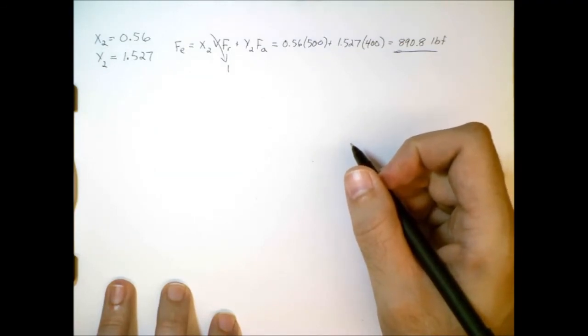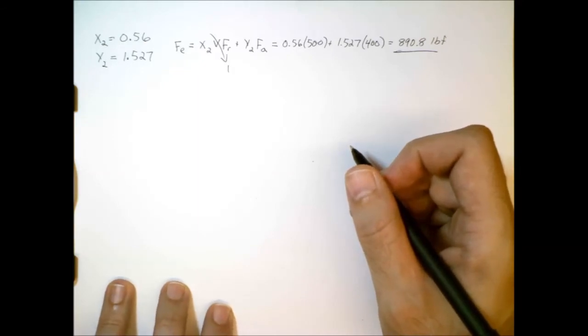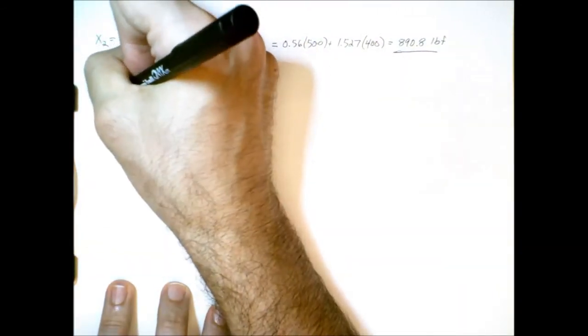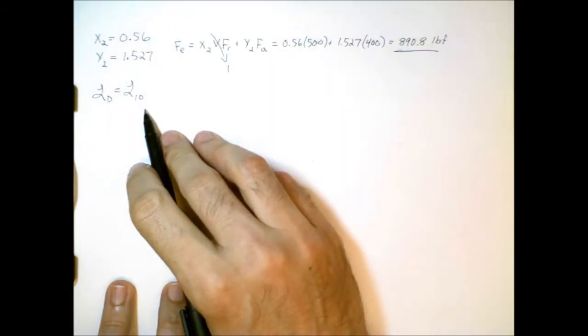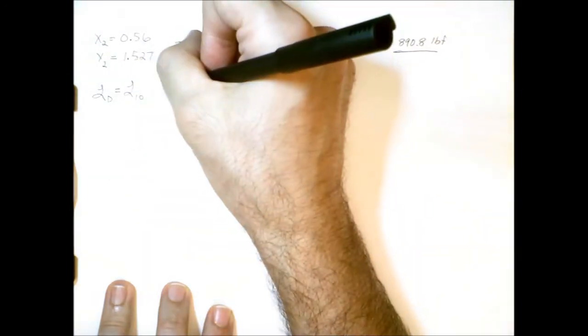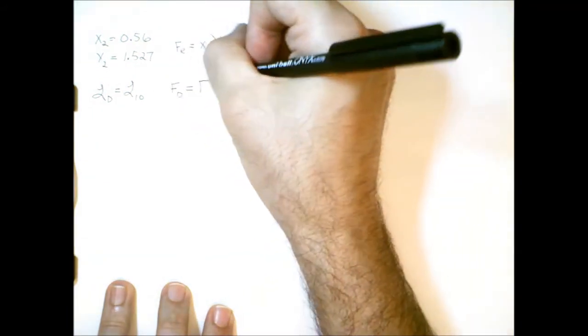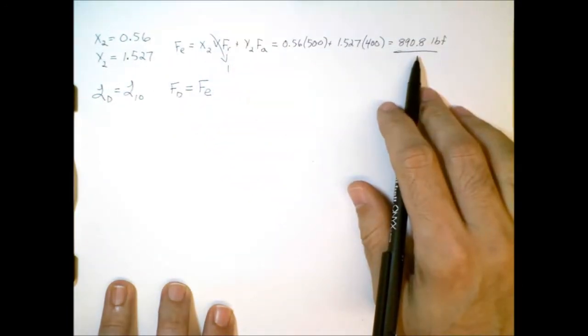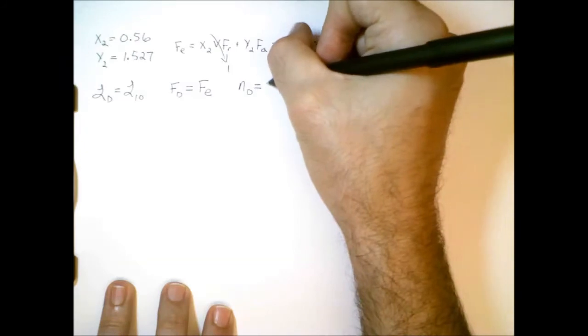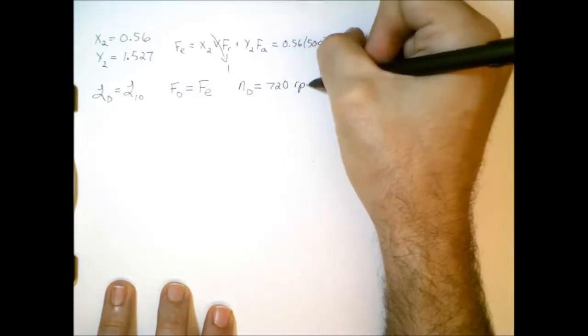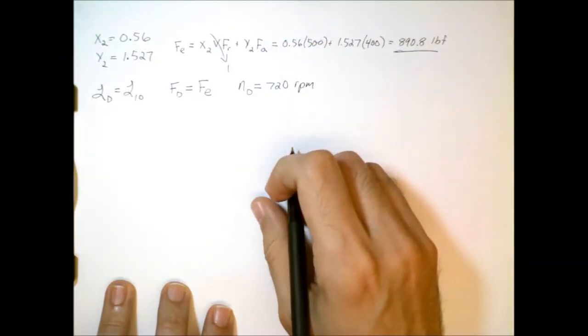The second step is we want to know what the design life is in hours. So, remember, our design life is actually equal to the L10 life in hours. And then our design load is equal to the equivalent radial force, which we just calculated, which is about 891 pounds. And we're also told that the rotational speed is 720 rotations per minute.